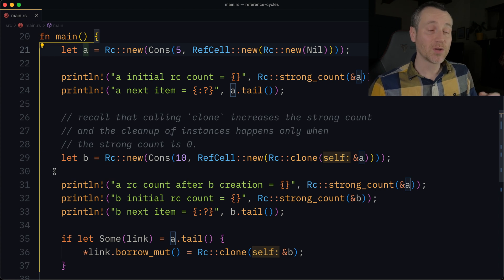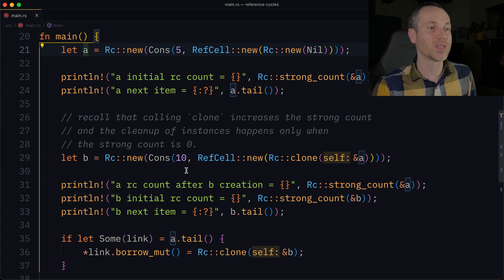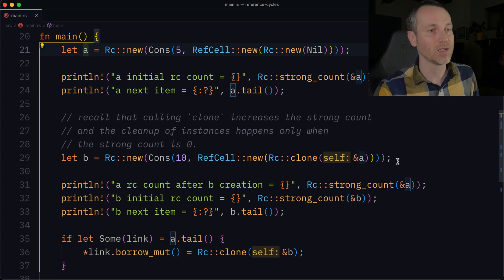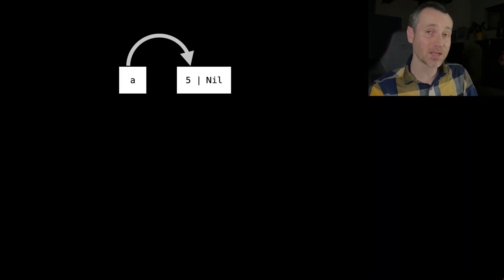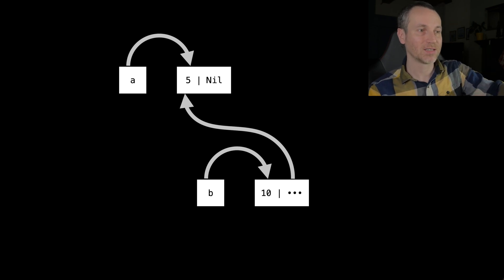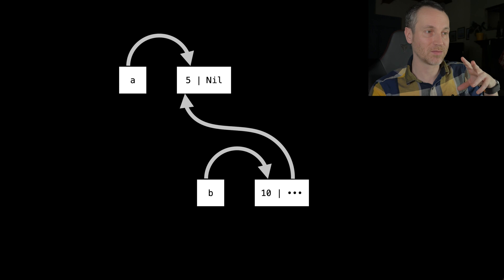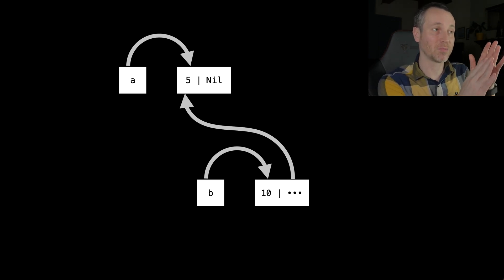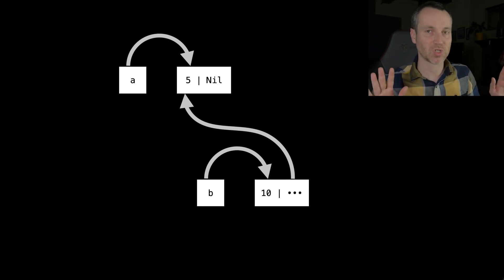On line 29, we make B, which is also a Cons with value 10, but then it points back to A. Notice we're adding a reference count of 1 when we add A to the cons of B. So now we've gone from just having A, to creating B that also refers back to what A points to — B has a cons of 10 that now references the beginning of A, which is 5.